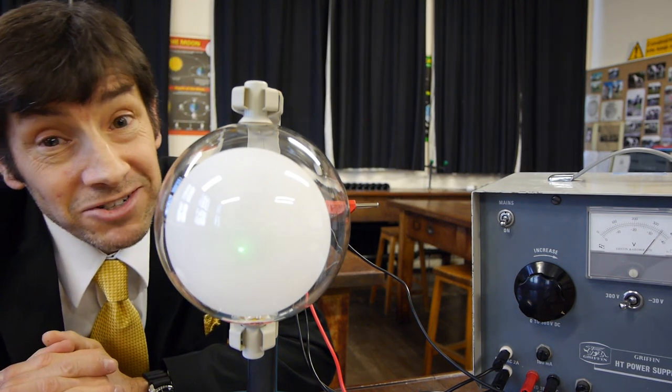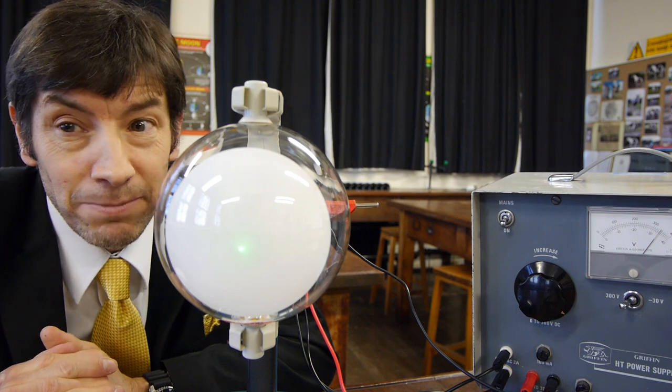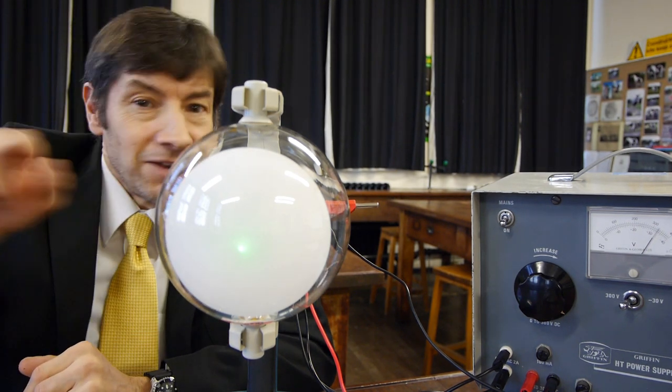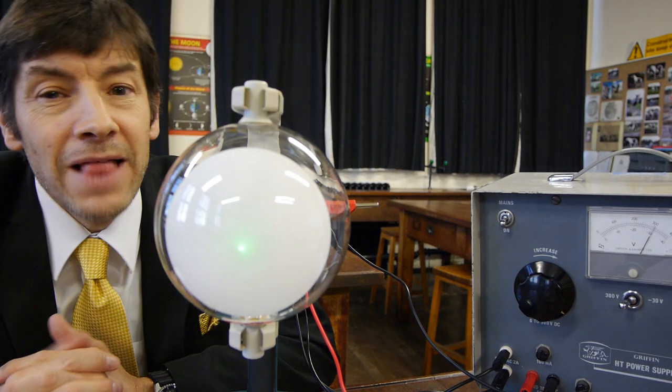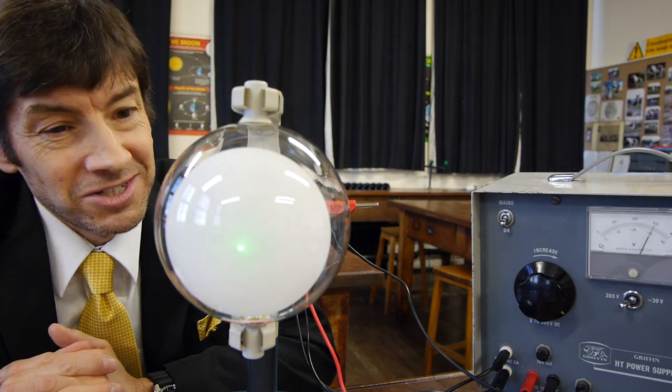Now obviously it's not a very interesting picture, but to get a TV picture, what we did with this green spot is scanned it from side to side and up and down and drew the frame of the picture you wanted to see.